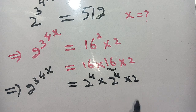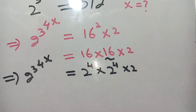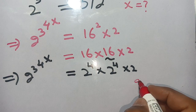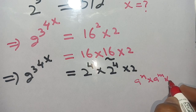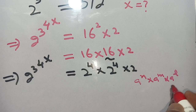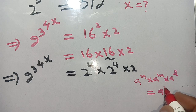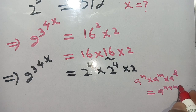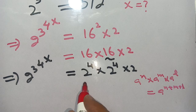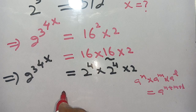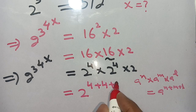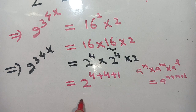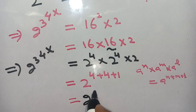We know that a raised to power n times a raised to power m times a raised to power l is equal to a raised to power n plus m plus l. Now we use this identity here. We get 2 raise to power 4 plus 4 plus 1, which is equal to 2 raise to power 9.